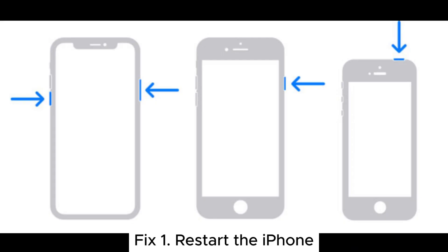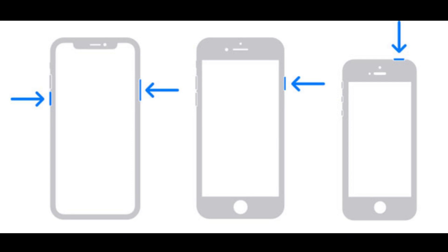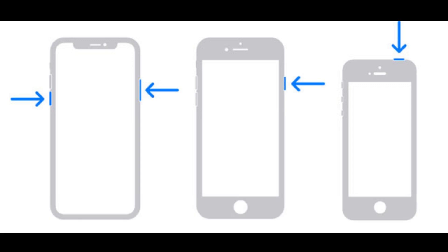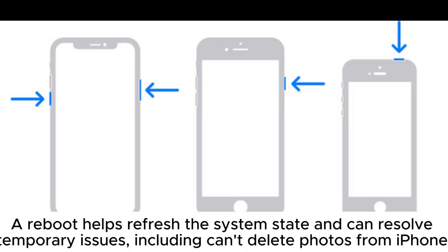Fix 1: Restart the iPhone. Restarting the device is one of the simplest and most effective solutions, especially when the system encounters minor glitches. A reboot helps refresh the system's state and can resolve temporary issues, including can't delete photos from iPhone.